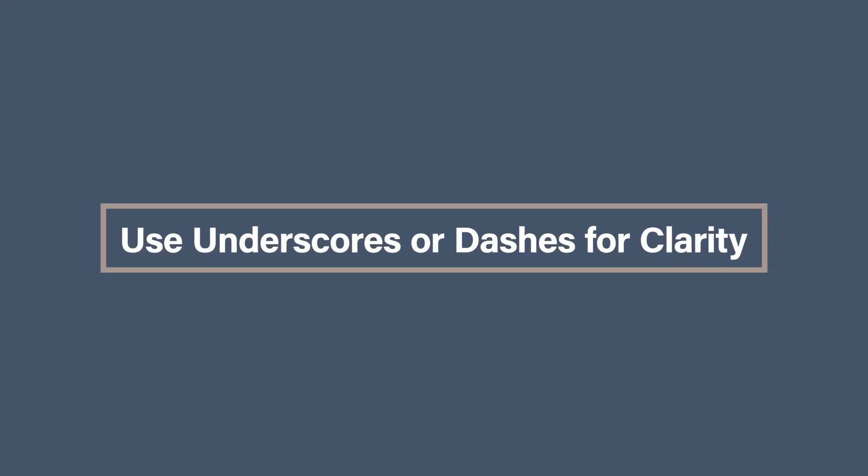Number three: use underscores or dashes for clarity. When adding descriptions, avoid using spaces in your file names. Some computer systems and cloud storage services don't handle spaces well — they may be replaced with strange symbols or cause issues when moving files. Instead, use either underscores or dashes to separate words.